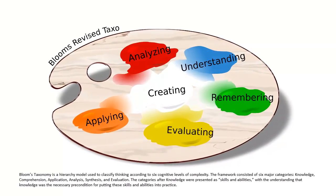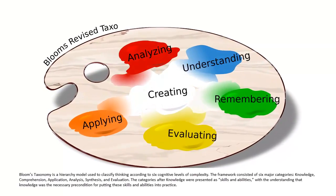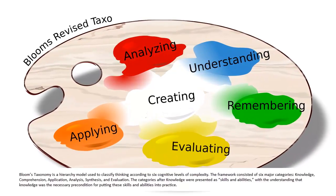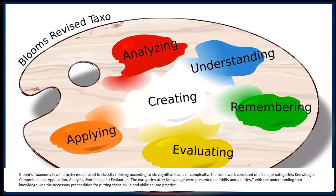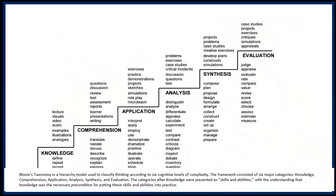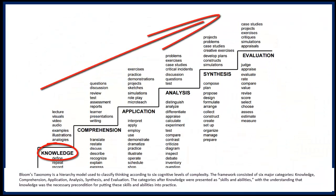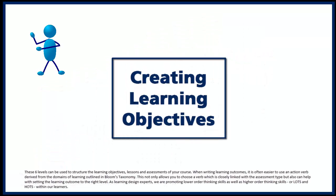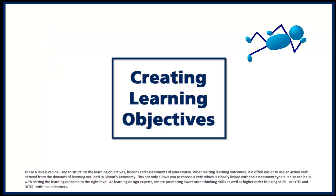Bloom's Taxonomy is a hierarchy model used to classify thinking according to six cognitive levels of complexity. The framework consisted of six categories. The categories after knowledge were presented as skills and abilities, with the understanding that knowledge was the necessary precondition for putting these skills and abilities into practice. These six levels can be used to structure the learning objectives, lessons, and assessments of a course.